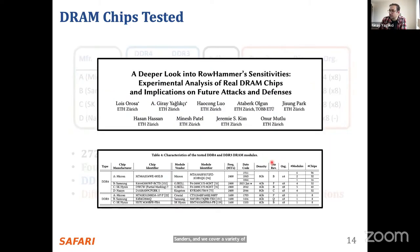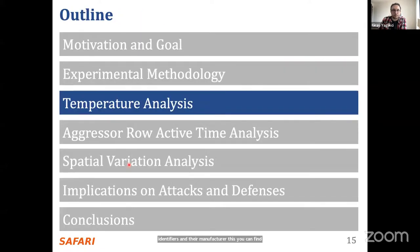There is another table in the full paper that gives the exact information of all these DRAM modules, chip identifiers, and their manufacturing dates. We have three analyses — let's move on with the first one: the temperature analysis. I'll start with the key takeaways and then dive into details.